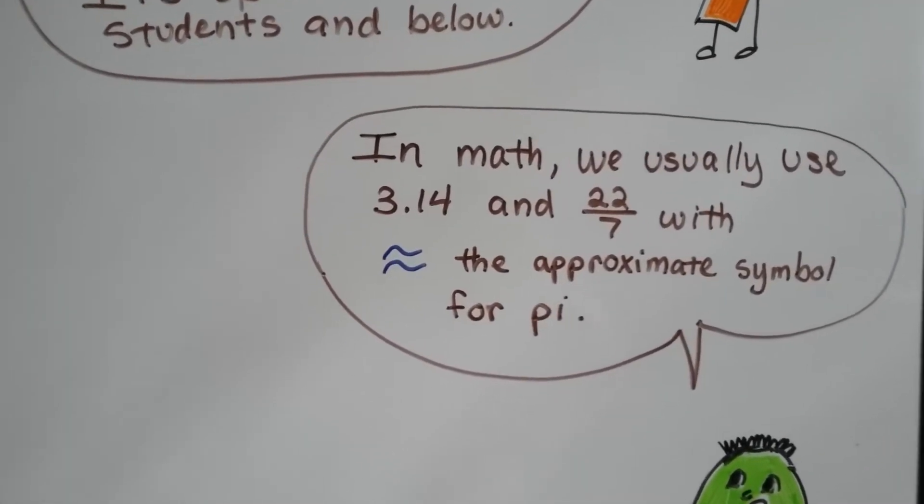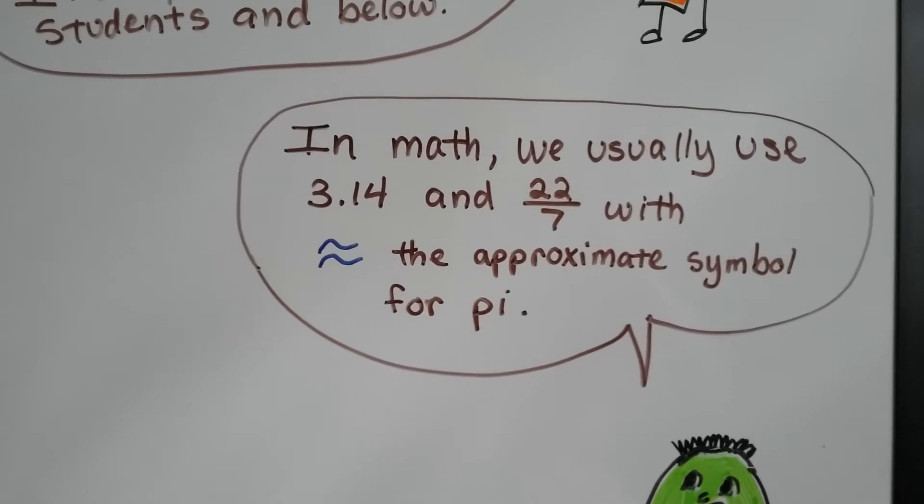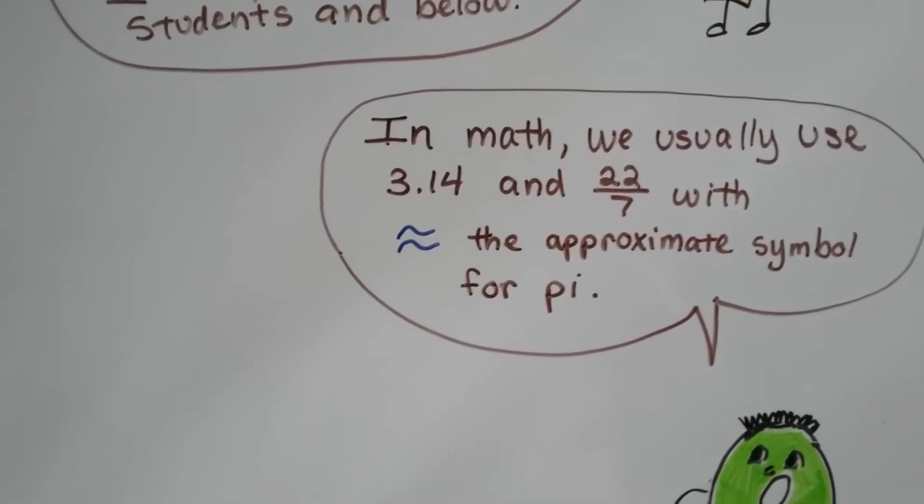So, in math, we usually use 3.14 and 22 over 7 with an approximate symbol for Pi.